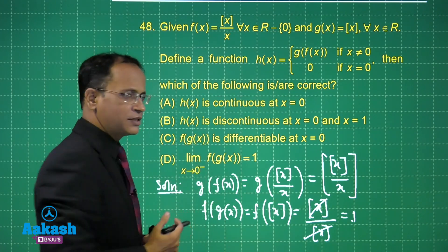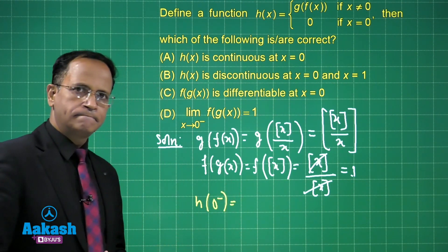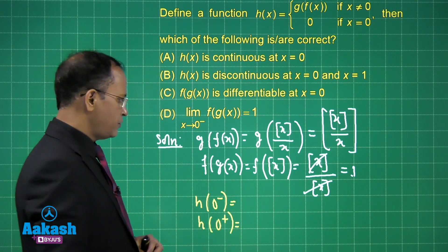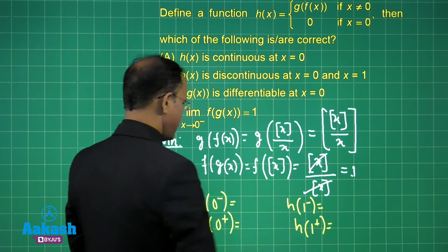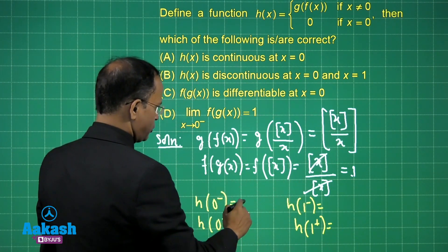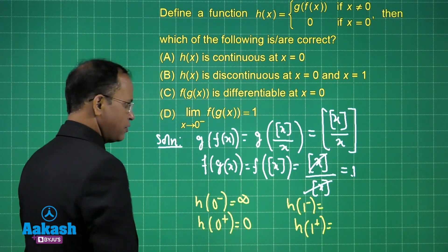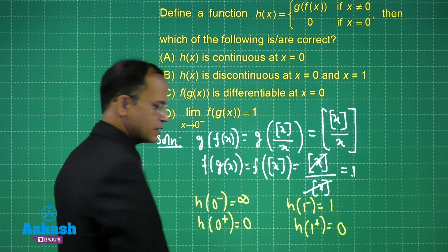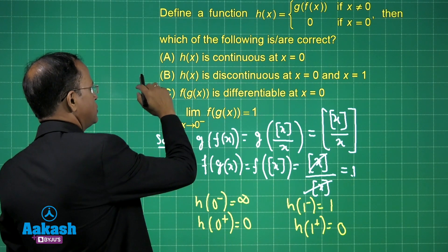To check continuity of h(x) at x = 0, we evaluate the left-hand limit h(0⁻), right-hand limit h(0⁺), h(1⁻), and h(1⁺). At 0⁻, the greatest integer value is −1 and the expression tends to negative infinity. At 0⁺ it is 0; at 1⁻ it is 1; and at 1⁺ it is 0. These are all discontinuous at x = 0 and x = 1, so option B is correct.